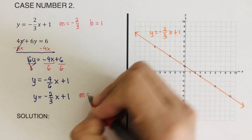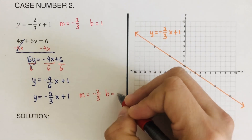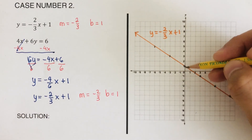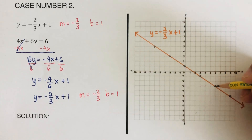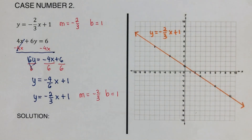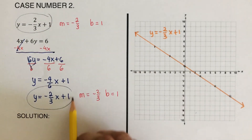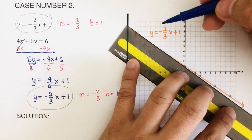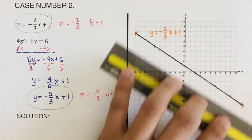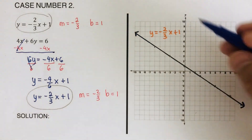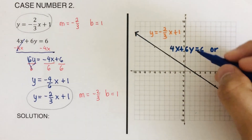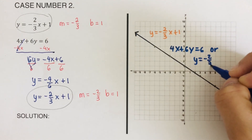We reduce negative four over six to lowest terms by dividing by two, giving y equals negative two thirds x plus one. So the slope m is negative two thirds and the y-intercept is one — which is exactly the same as the first equation. If we graph it: start at one, go down two right three repeatedly, and also up two left three. These two equations are a match.